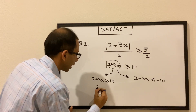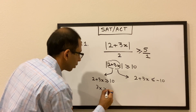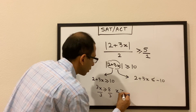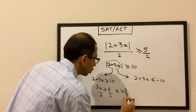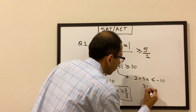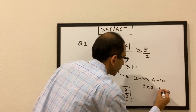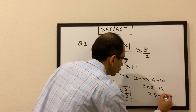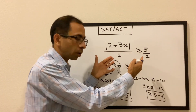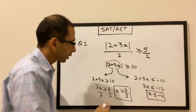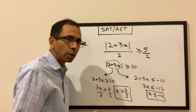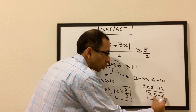When we talk about the positive value, the sign remains as is. Then we solve: 3x is greater than or equal to 10 minus 2, which is 8. Dividing by 3, we get x is greater than or equal to 8 over 3. The second solution gives x is less than or equal to minus 4. So this inequality holds for all x such that x ≥ 8/3 or x ≤ -4.